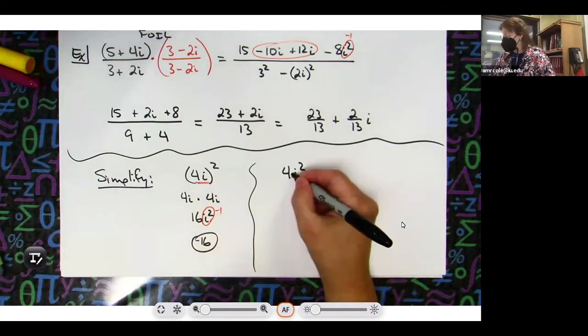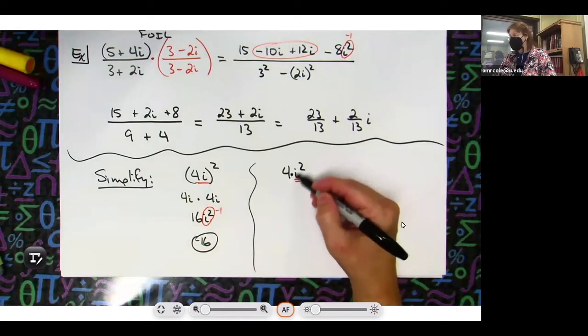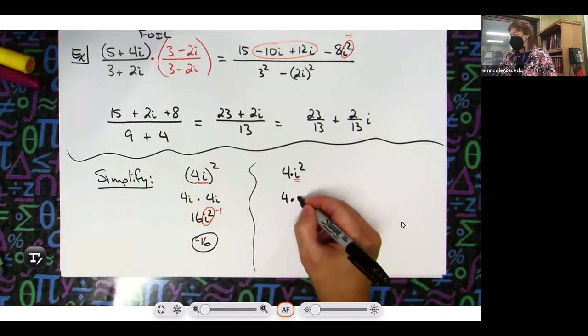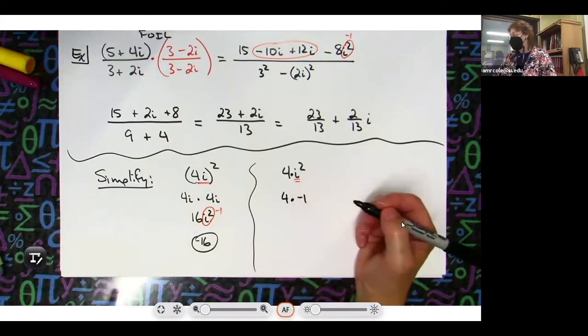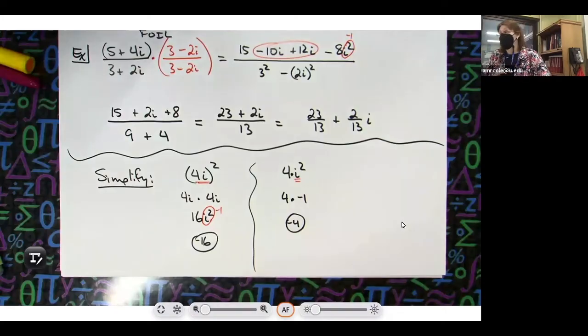Now over here the only thing that's being squared is the i. So this one is really 4 times a negative 1, right, because i squared is negative 1, and 4 times negative 1 is negative 4. So they don't even come close to being the same answer. It's because where is the base, what's being squared.